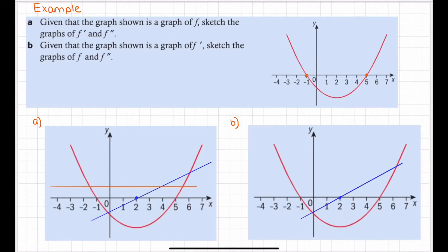Looking at x equals negative one: before negative one, the graph is in a positive y-value, meaning the function was increasing up to that point. After negative one, the graph is negative — below the x-axis — meaning the function was decreasing after that point. So there was actually a maximum at x equals negative one.